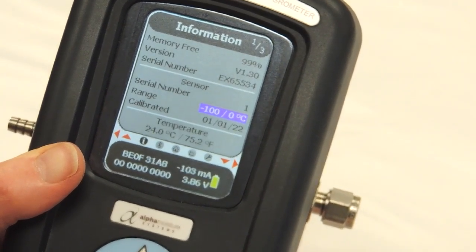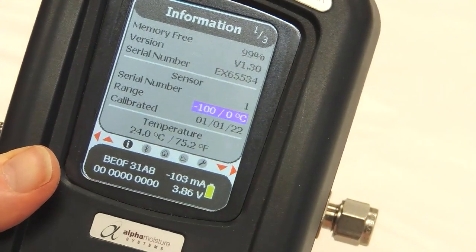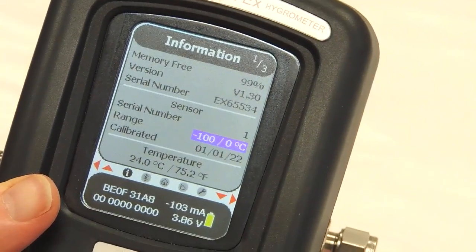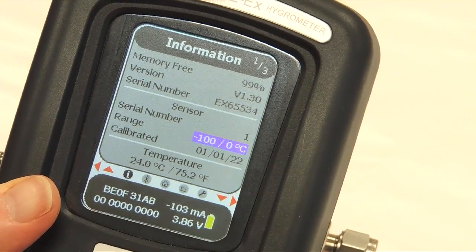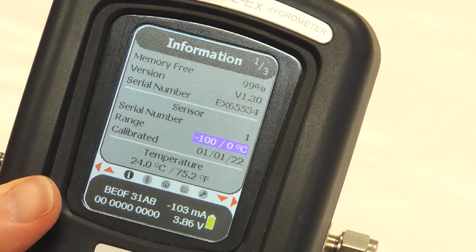Then we have an information page showing the range, dew point range of the instrument, the serial number and the version of the firmware inside the instrument and the serial number.